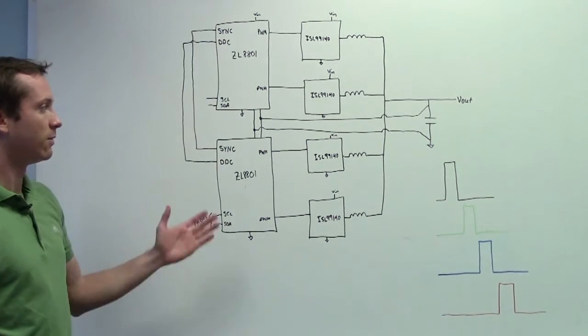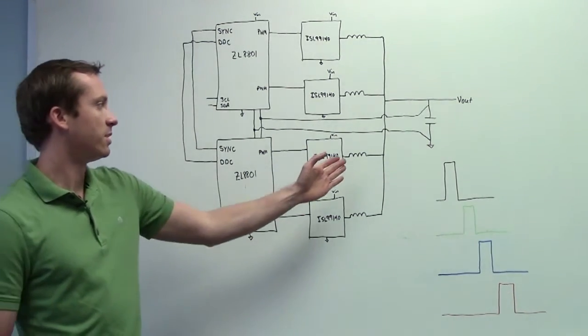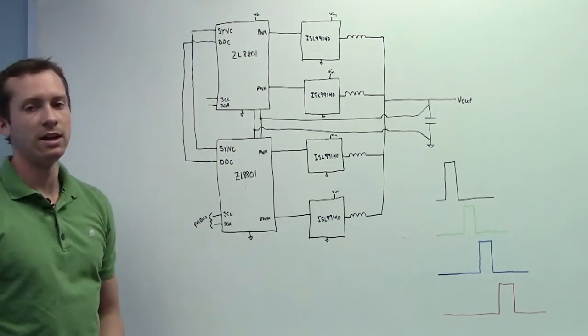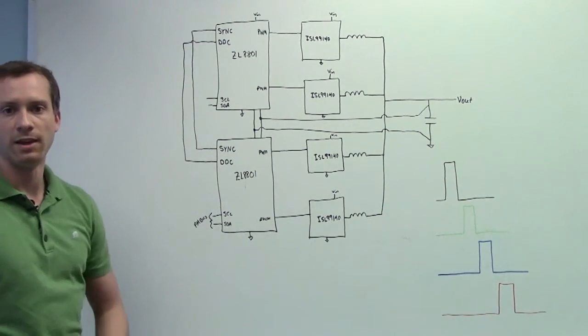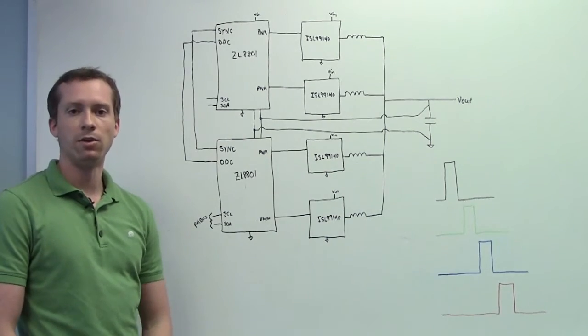So again, in this case I have a four-phase design with the outputs tied together and the ISL99140 Dr. Moss power stage. A design like this would be capable of approximately 120 amps.